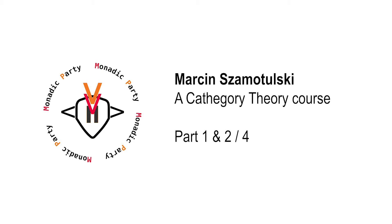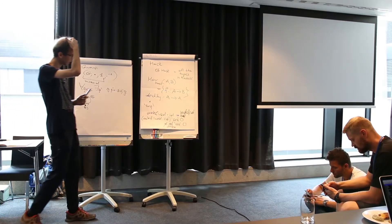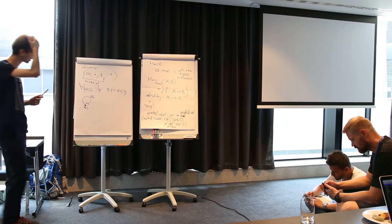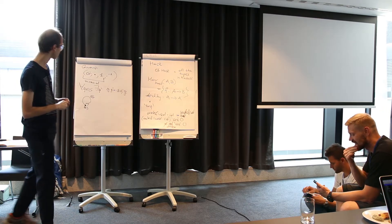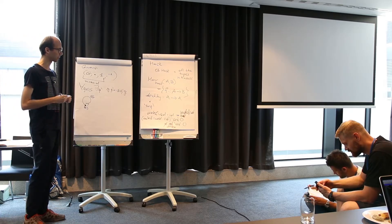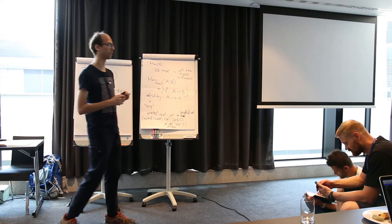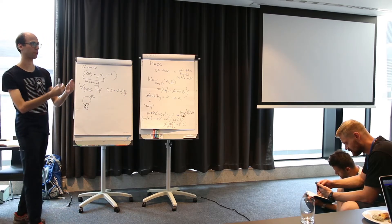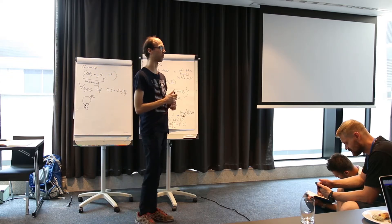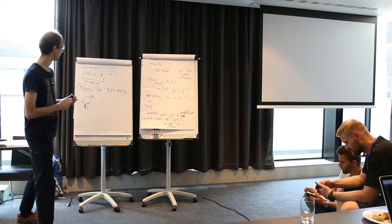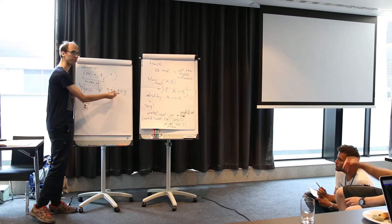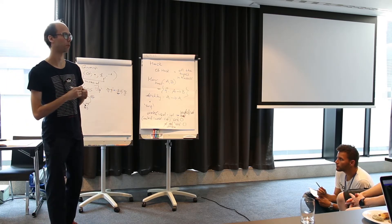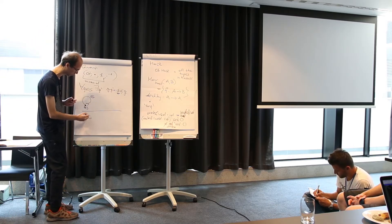Let's go back to our category stuff. I wanted to speak about groups. Groups are a particular kind of monoids where every element has an inverse. It would be nice to be able to speak about morphisms that are invertible in any category, not just categories with one object. We have everything we need to speak about inverses in an abstract category C, because you need the composition and the unit.